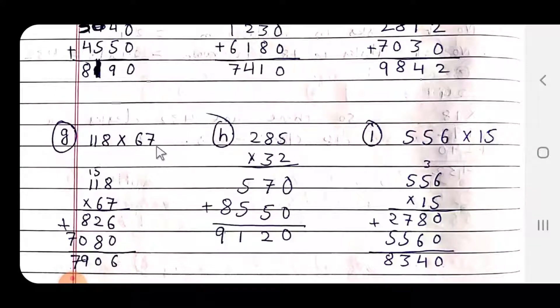118 x 67. 8 x 7 = 56, 5 carry over. 7 x 7 plus 5 = 12, again 1 carry over. 7 x 7 plus 1 equals 8. Now 6 x 8 = 48, 4 carry over. 6 x 1 plus 4 equals 10, 1 carry over. 6 x 1 plus 1 equals 7, which gives us 7906.